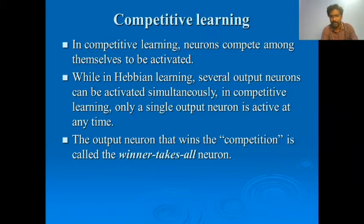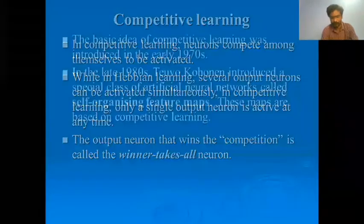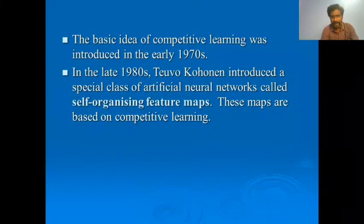The output neuron that wins the competition is called the winner-takes-all neuron. That's the core concept of competitive learning — the winning output neuron receives the reward. The idea behind competitive learning was introduced in the early 1970s, and in the late 1980s, Teuvo Kohonen introduced a special class of artificial neural networks called self-organizing feature maps.